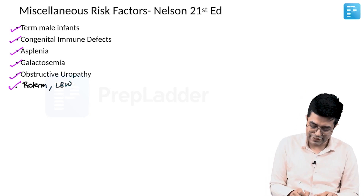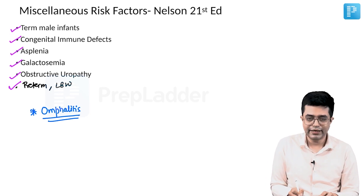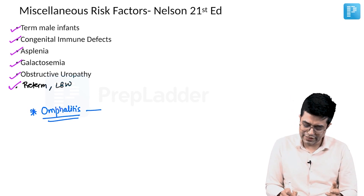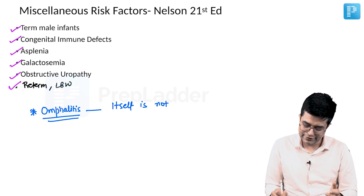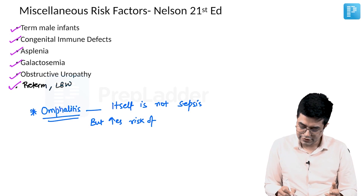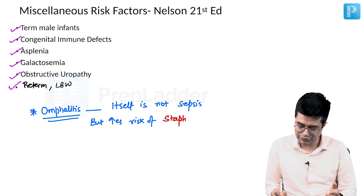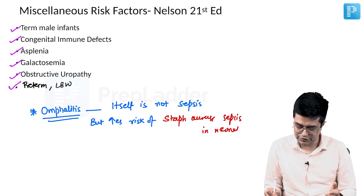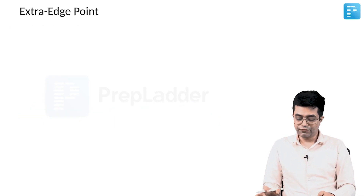Also remember that omphalitis — inflammation and infection of the umbilical stump — is fairly common. Omphalitis itself is not included in sepsis, but it increases the risk of Staphylococcus aureus sepsis in the neonate. This is another important fact to remember.